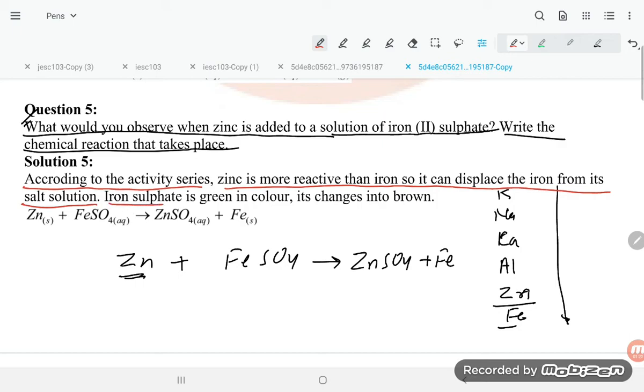Iron sulfate is green in color; it changes into brown. Iron sulfate is green; now it will become brown color. This is the answer. Thank you so much for watching.